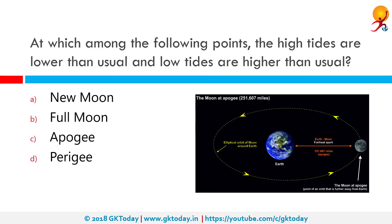At which among the following points are high tides lower than usual and low tides higher than usual? The correct answer is Apogee. Apogee is the furthest point of the Moon from the Earth. When the Moon is at Apogee, at its furthest distance from the Earth, it has less gravitational pull, which along with other factors that influence the tides can contribute to lower tides or lower variation in the high-low tide levels.